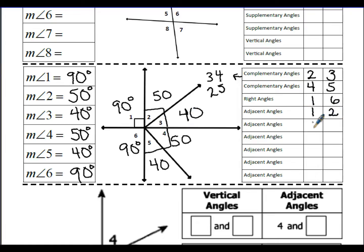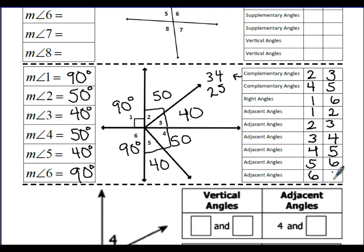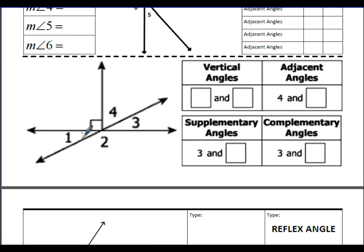Looking at adjacent angles: angles 1 and 2 are adjacent, 2 and 3 are adjacent, 3 and 4 share a common side, 4 and 5 share a common side, 5 and 6 are adjacent, and 6 and 1 share a common side and vertex — so they are also adjacent.